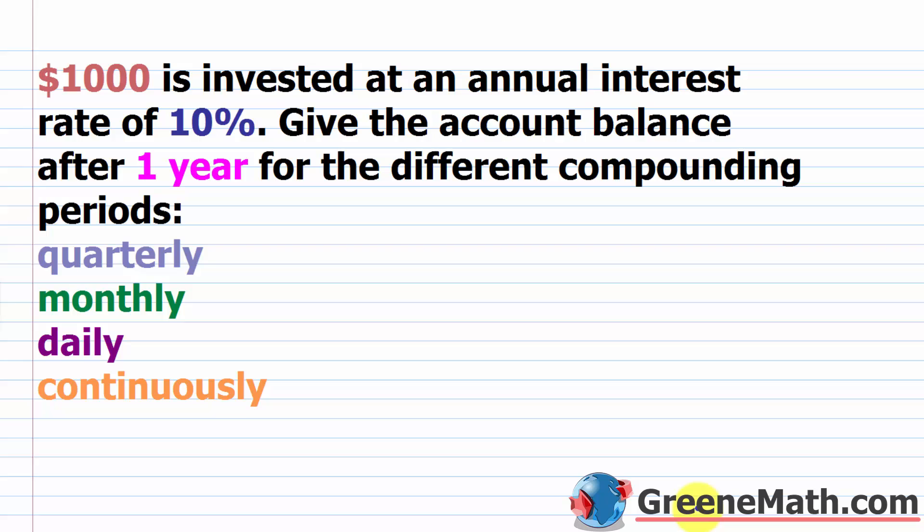So if we want to build up to this idea of continuously compounding interest, let's start out with what we know. I have a basic example here so we can compare them. $1000 is invested at an annual interest rate of 10%. Give the account balance after one year for the different compounding periods: quarterly, monthly, daily, and continuously.